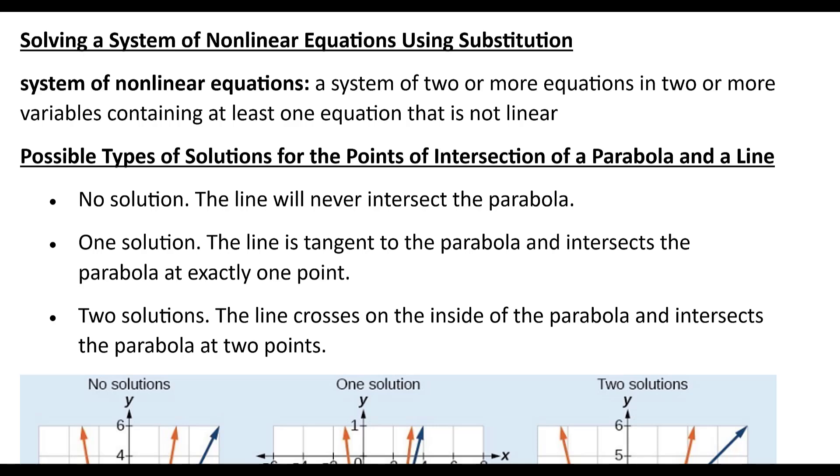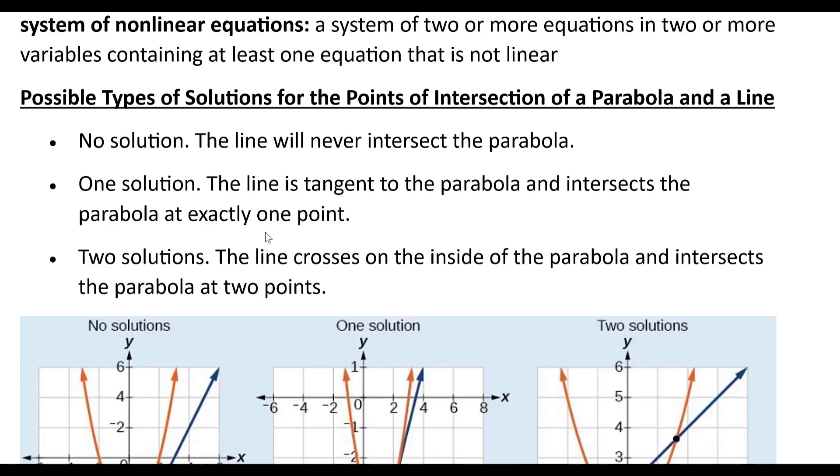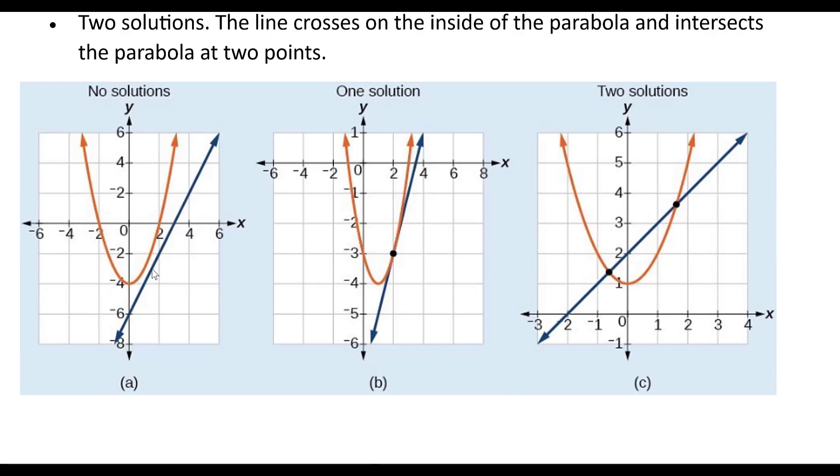Possible types of solutions for the points of intersection of a parabola and a line. You could have no solution, like this example right here, where they don't cross at all.